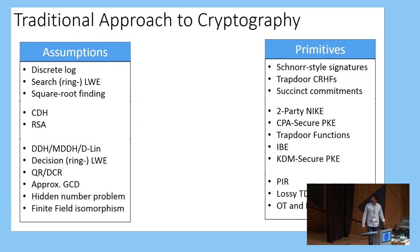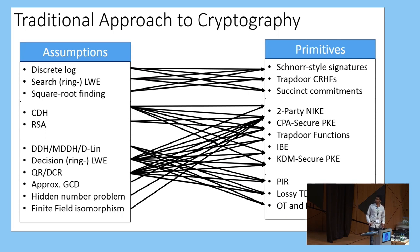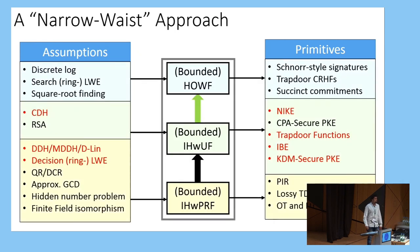Our results imply a certain departure from the traditional notion of building cryptographic primitives. Typically, we have concrete number-theoretic assumptions on one side and primitives with desired security notions on the other, and we build these primitives explicitly from those assumptions using techniques very specific to each assumption. For example, we knew in the 1970s and 1980s that trapdoor functions are implied by RSA. It took 30 years to understand they're also implied by DDH and LWE, and only recently were trapdoor functions built from CDH. In this work, we propose a different approach, which we call a narrow-waist approach.